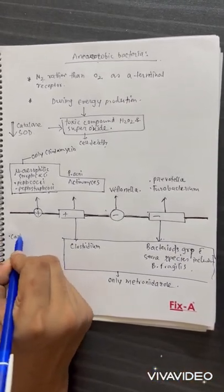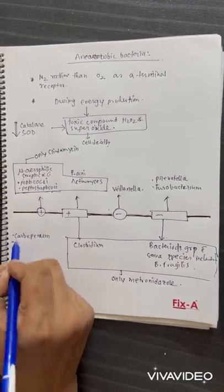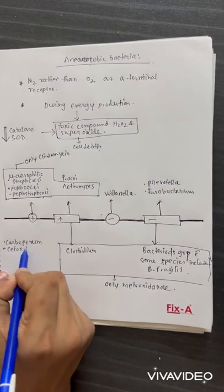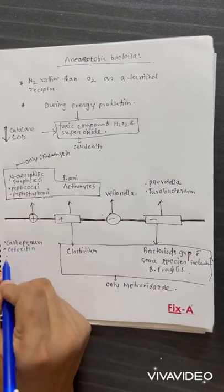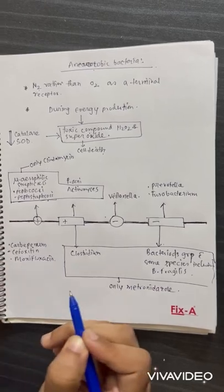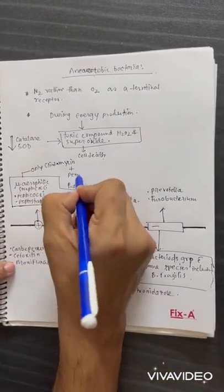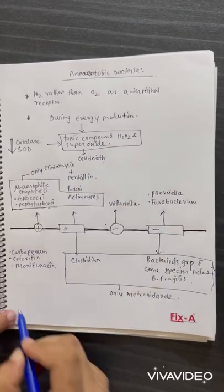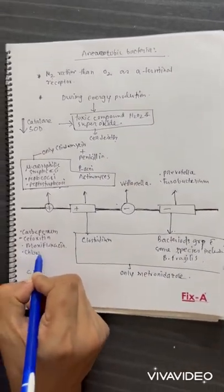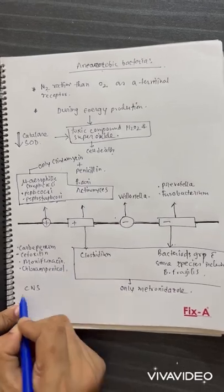Other antibiotics that work everywhere include carbapenem, second generation cephalosporins like cefoxitin, moxifloxacin, and penicillin G. Optimally, clindamycin plus penicillin G works better. Penicillin G is also used in CNS infections.